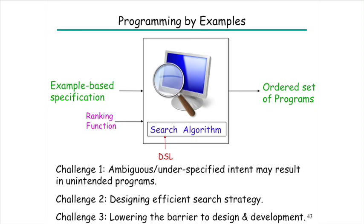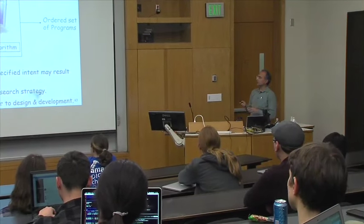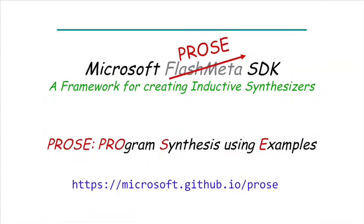Our architecture now has a generic search algorithm parameterized by a domain-specific language. As long as you use operators for which we've already implemented the reduction strategy, you just write the DSL and the search algorithm is automatically generated — similar to how you use Yacc and Bison for parsers without implementing LL(1) or LR(1) algorithms yourself. PROSE — Program Synthesis Using Examples — has been released publicly for non-commercial purposes. When we incorporate natural language interaction it will stand for Program Search.